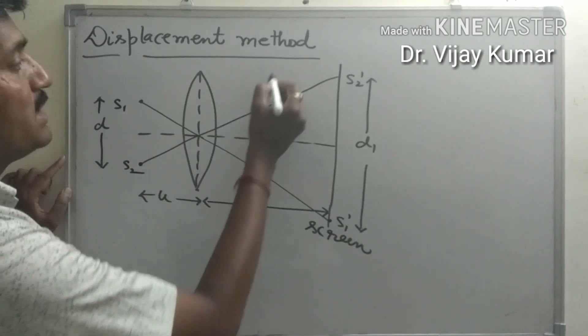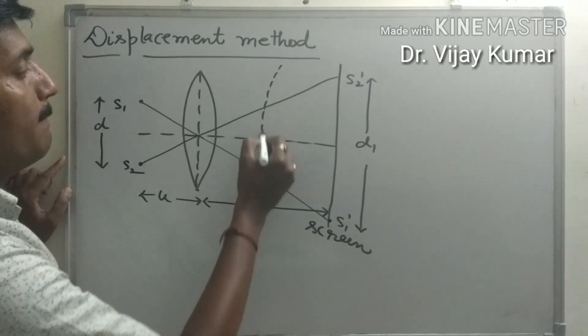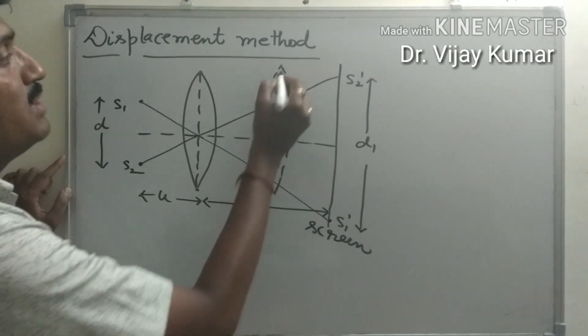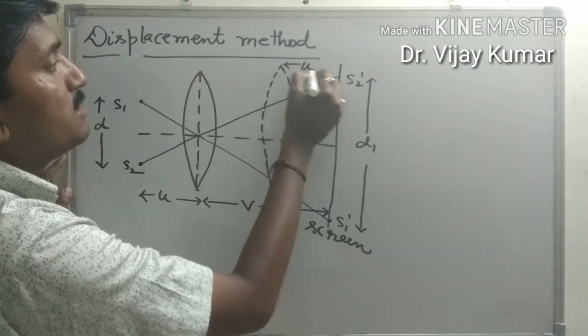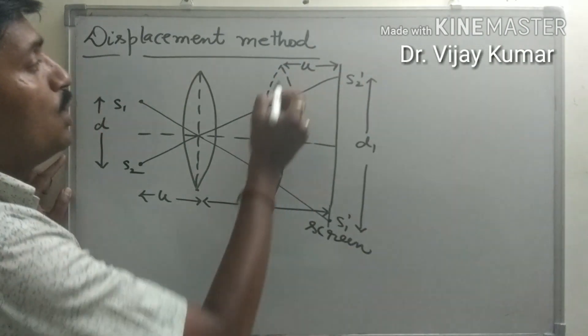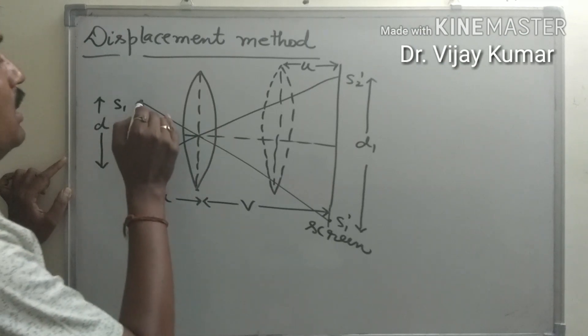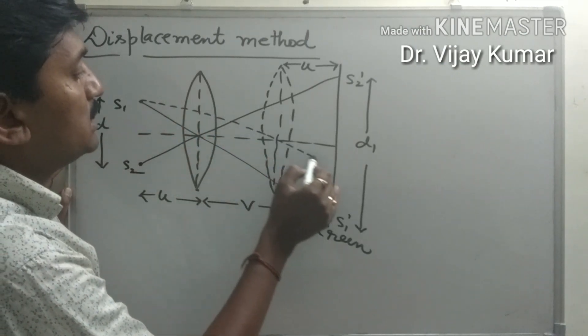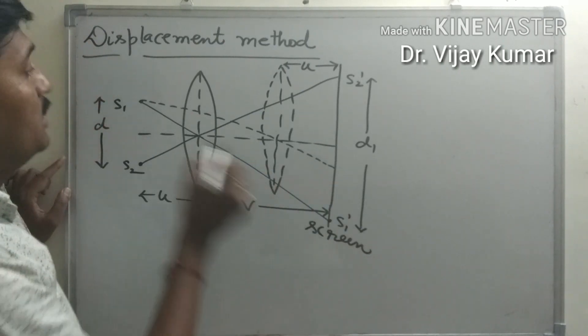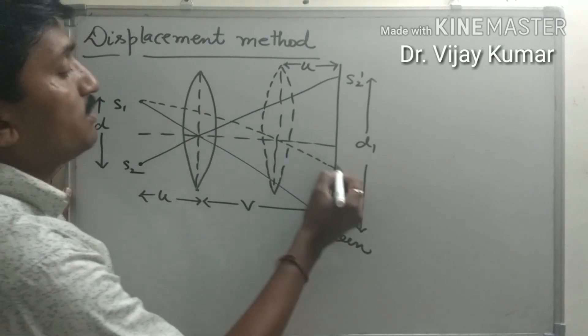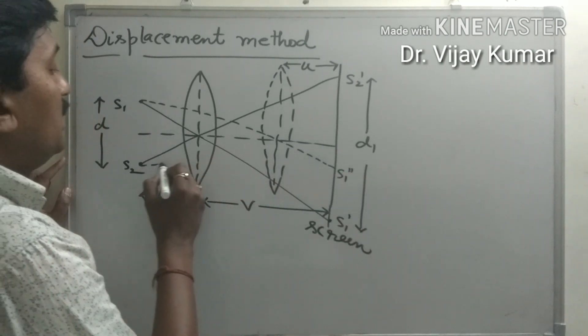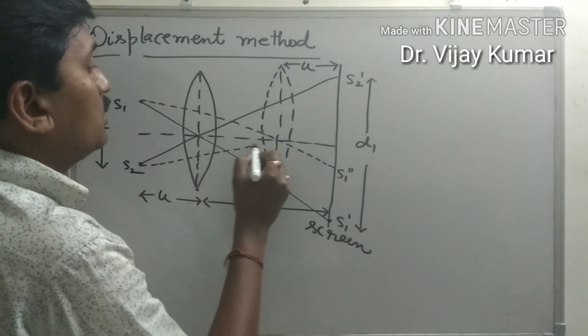Now we displace this lens in such a way that this distance becomes u. Again, the light ray from the first coherent source passes through the optical center and the image of S1 becomes S1 double dash. The light ray from another coherent source